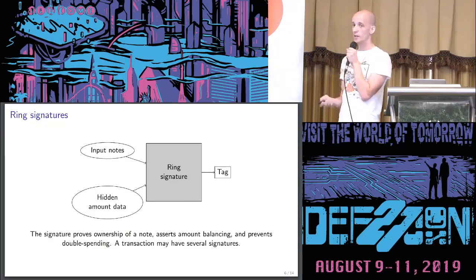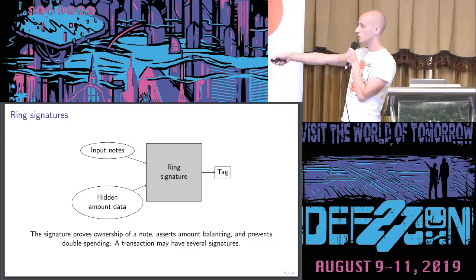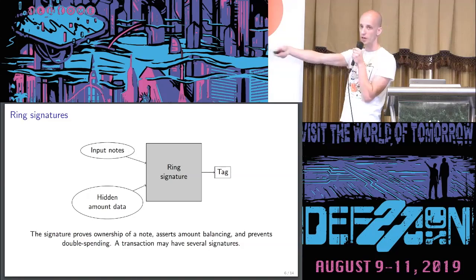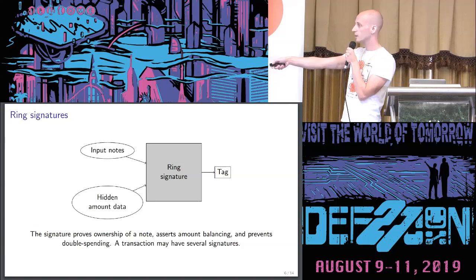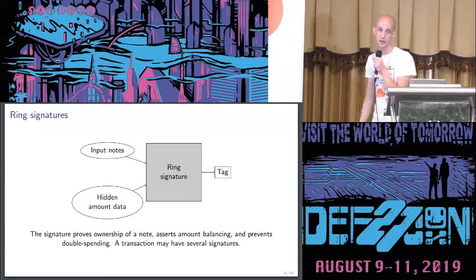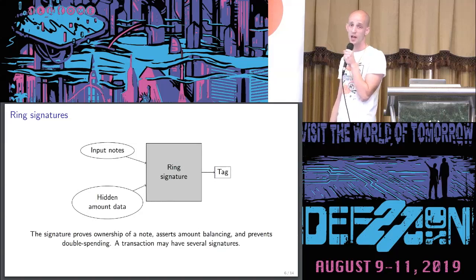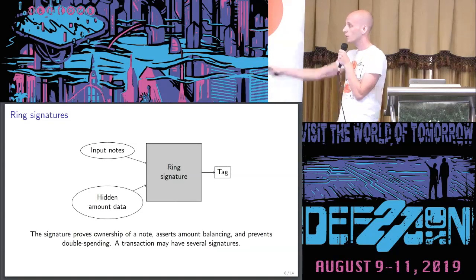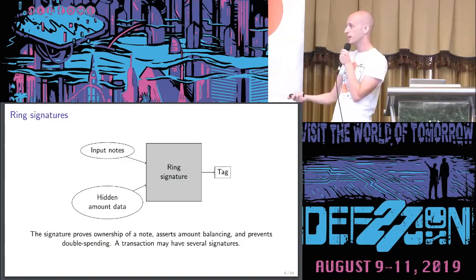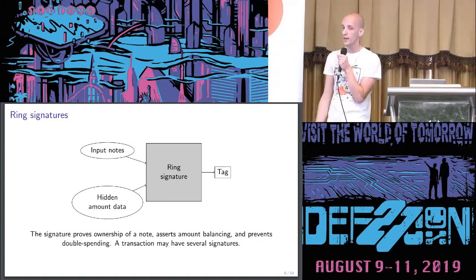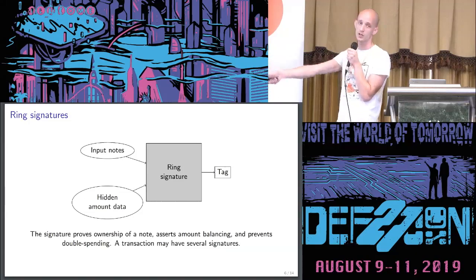Keep in mind the way Monero's ring signatures currently work: you have a signature structure that does some cryptographic magic. What goes in are the input notes — a true spend and a bunch of decoys. Some additional hidden amount data goes in, and what also pops out is called a tag, used to detect double spending. If two transactions produced the same tag, you'd detect a double spend. The whole signature operation has to prove you own the note you're spending, assert that the transaction balances in a hidden way, and prevent double spending. A transaction may have several signatures if spending several input notes — which is why scaling gets bad.